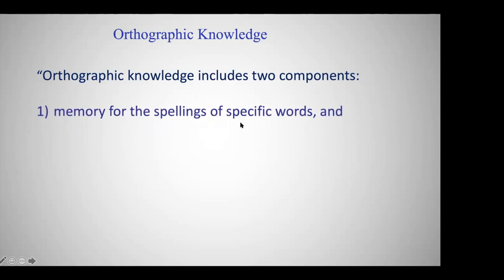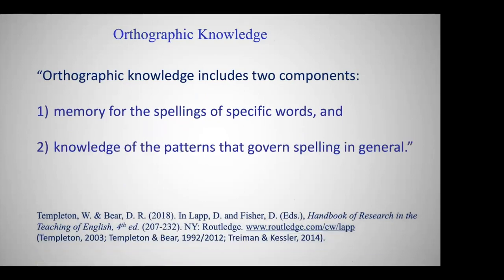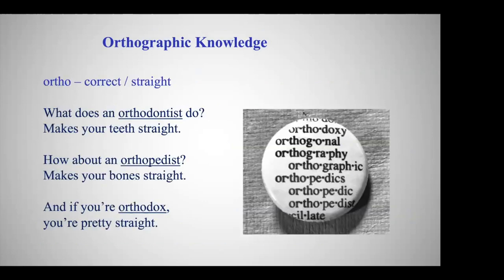Orthographic knowledge has two components. One is a memory for how words are spelled, and the second is knowledge of the patterns that govern spelling. You need both: a memory for spelling and the ability to see patterns. When I talk about dyslexics, I think of people who have trouble seeing those patterns and trouble memorizing words.